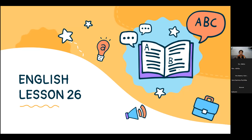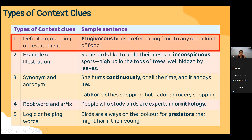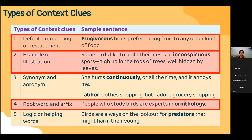Today we're going to learn the last context clue. We've done definition or restatement, root word and affixes, and example or illustration where the author uses words to explain the meaning of difficult words. Today we're going to learn synonyms and antonyms.